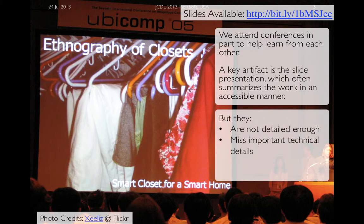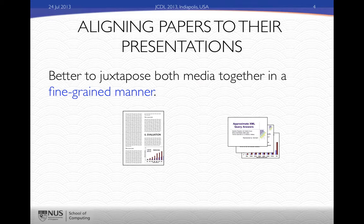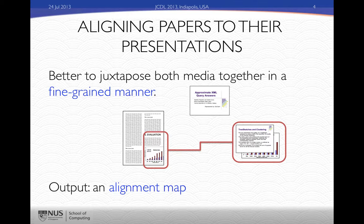The problem with such slide presentations is they often are just the tip of the iceberg — sort of like an abstract. They give a teaser to what's in the work but miss out important technical details. So a clear way where we can win is to meld both of these artifacts together: the slide presentation as well as the technical document. Hence our idea of being able to align papers to their presentation. We want to juxtapose both media together in some type of fine-grained manner, taking certain slides from a presentation and locally aligning them to parts of the document. For example, these two slides in this presentation actually refer to the evaluation section of this document.